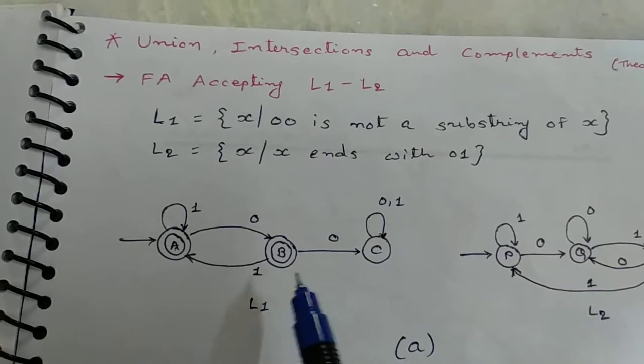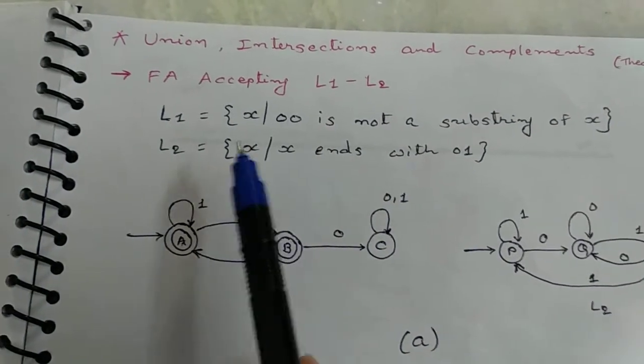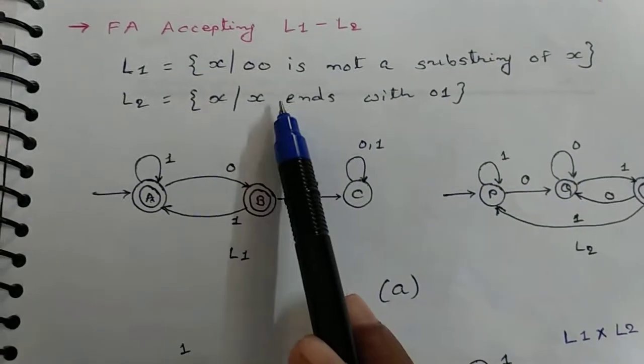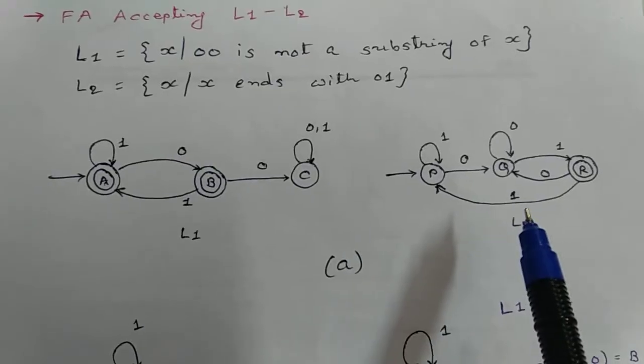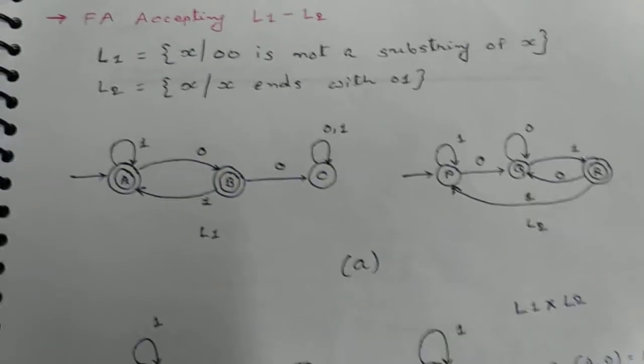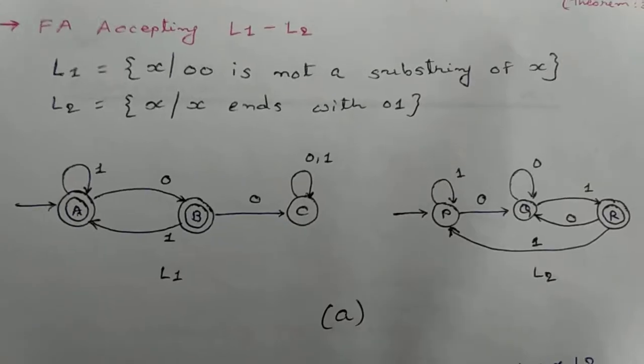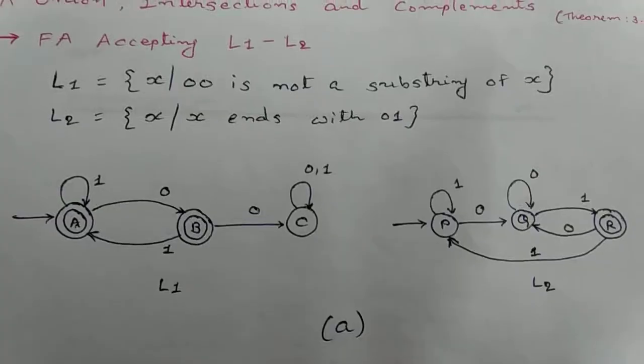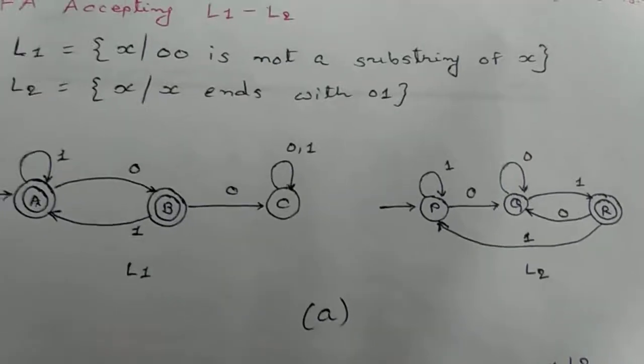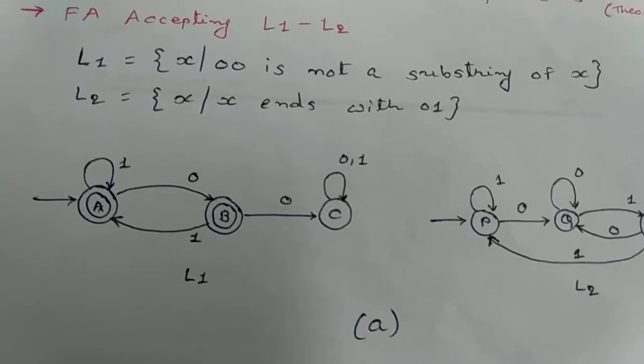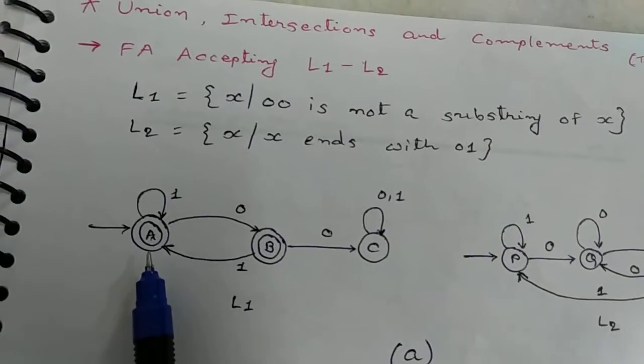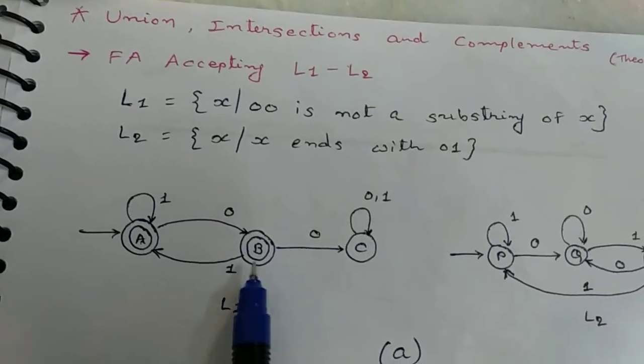Now, we have two automatas. From language L1, we draw the finite automata L1, from language L2, we draw the finite automata L2. For L1 and L2, any operations of L1 and L2, first you have to cross product of L1 and L2. Here, in L1 there are three states A, B and C, and L2, three states P, Q and R.